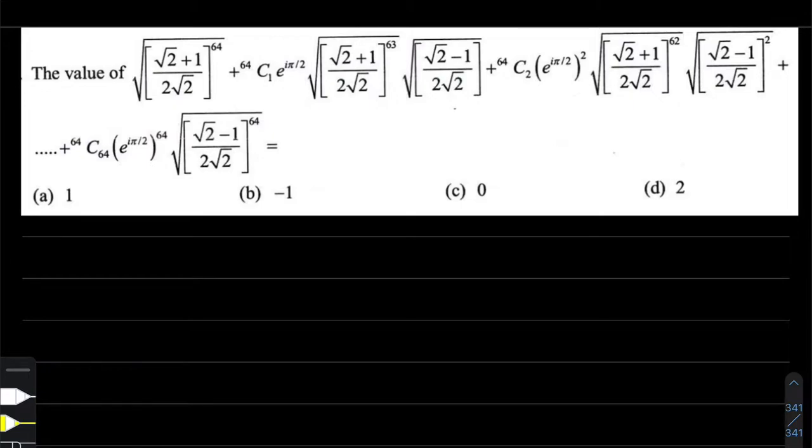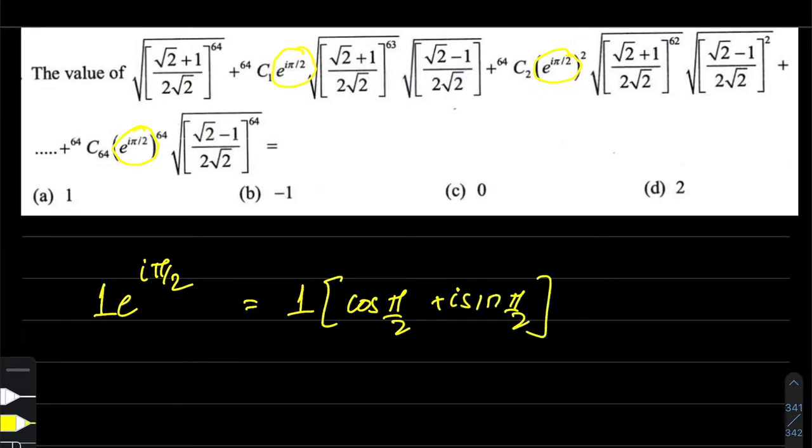Let's understand how to solve this. We see a few terms that are constantly repeated. The first term is e to the power iπ/2, which appears multiple times. This term is written in Euler's form. This expression is cos(π/2) + i·sin(π/2), which in plain and simple words is just i. E to the power iπ/2 stands for iota, nothing else.